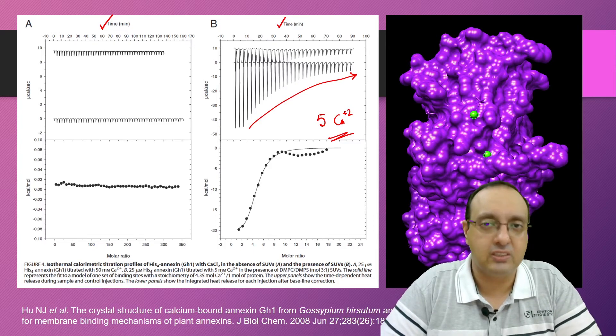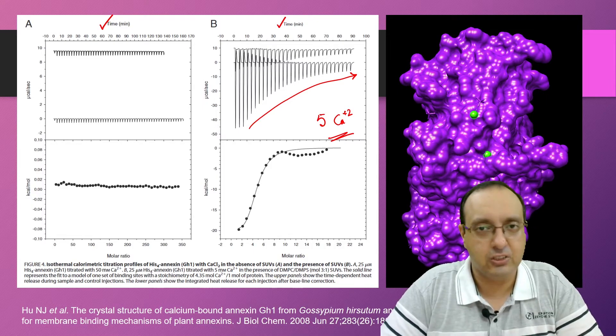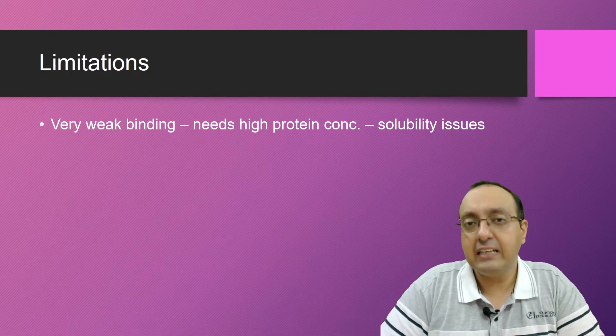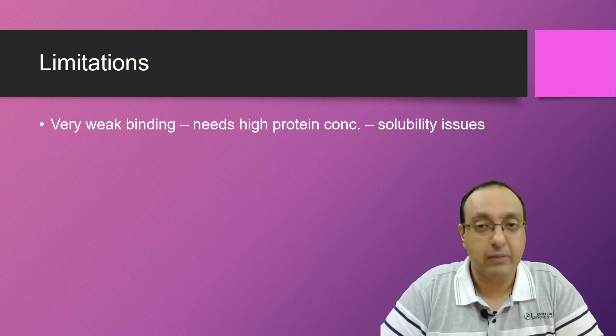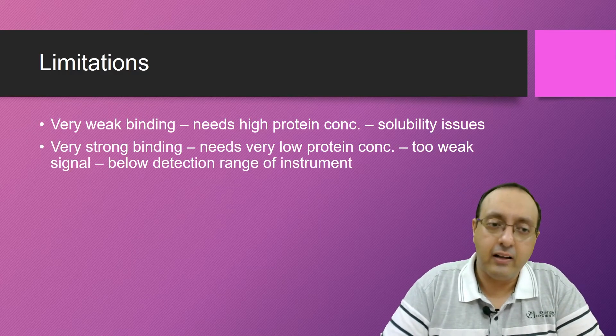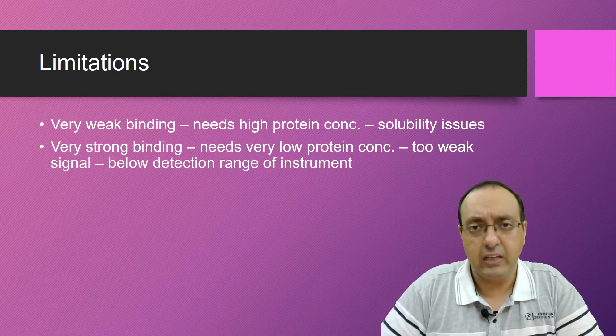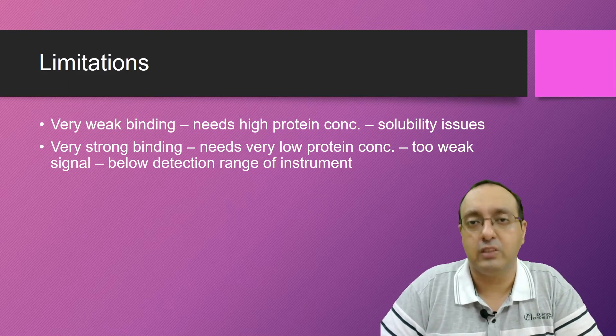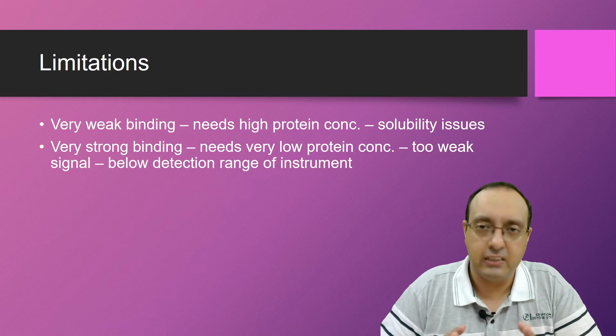But there are some limitations to this technique as well, although it is pretty sensitive and extremely powerful. The first limitation is that in case of very weak binding, sometimes we need to have very high protein concentrations, and this is sometimes not feasible because of solubility or aggregation issues of the protein. And another is if there is very strong binding, then we need very low protein concentration to detect it using ITC, and this usually produces very weak signals which are below the detection range of most of the ITC instruments. But apart from that, for most normal proteins and normal circumstances, it is a pretty useful technique.